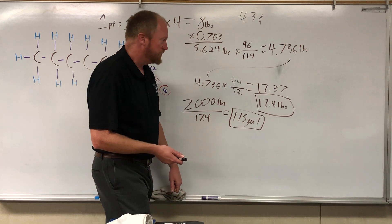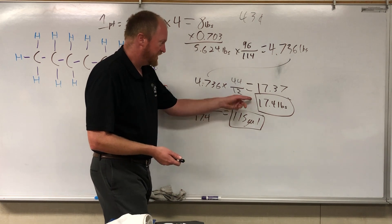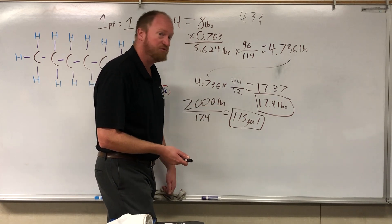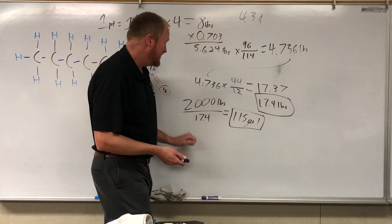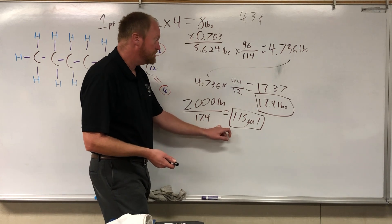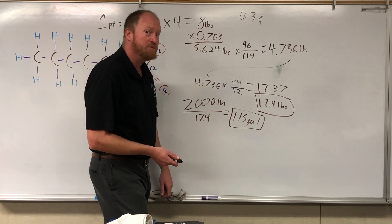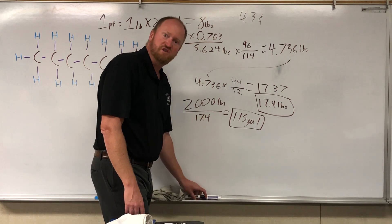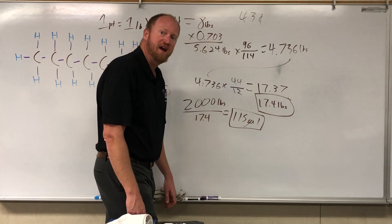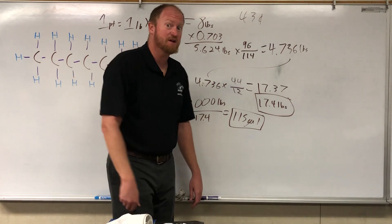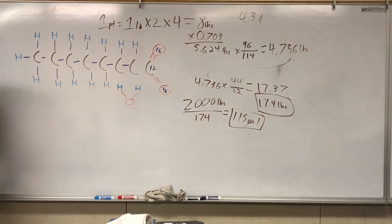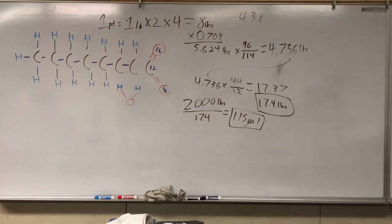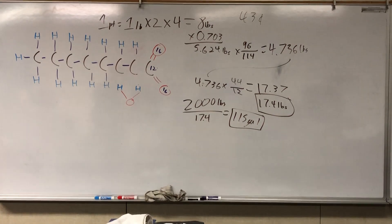Gas is pricey, but now you know. A gallon of gas produces 17.4 pounds of CO2. In order to produce a ton of CO2, you need to burn about 115 gallons of gas — which is a lot of tanks of gas. Think about it next time you're at the pump, and don't forget to think about the money you're paying at the pump too. Have a nice day. Bye bye.